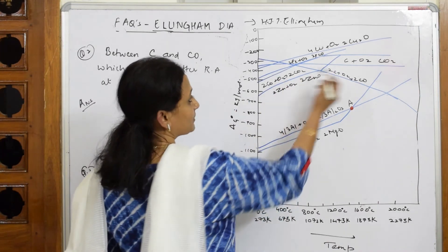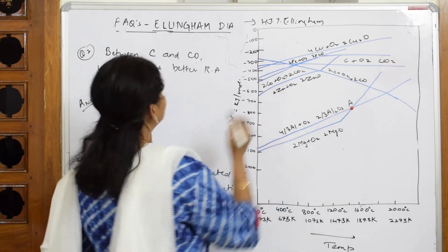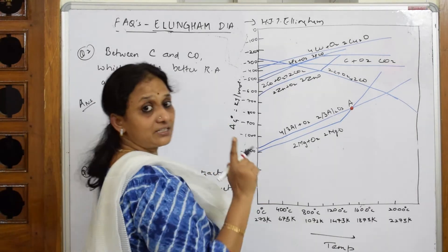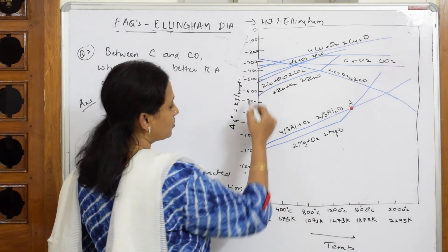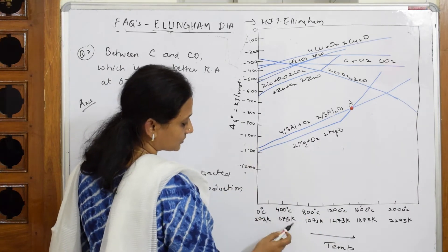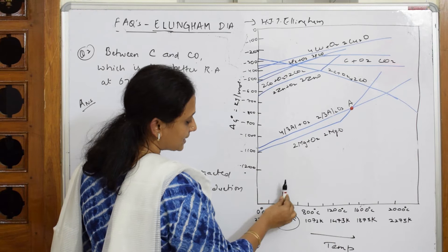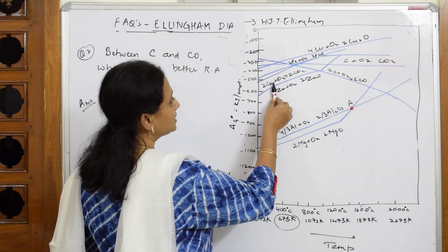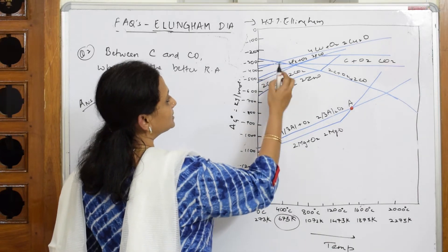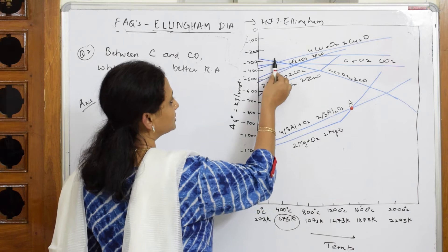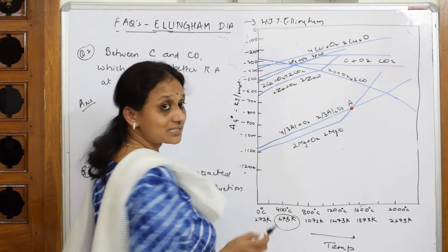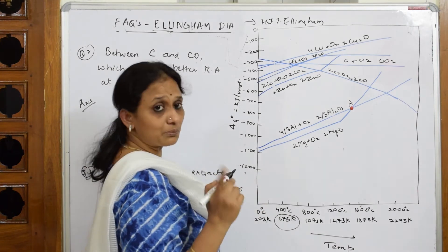In this graph, carbon is here and carbon monoxide is here. Which is a better reducing agent at 673 Kelvin? Now, 673 Kelvin is located here on the x-axis. At this point, the carbon monoxide graph line and your carbon line are exactly coincident — both values can be read at the 673 Kelvin mark.